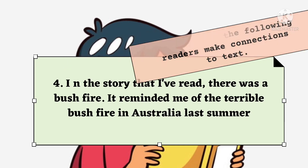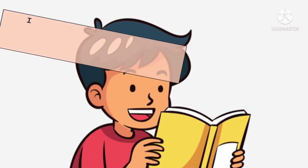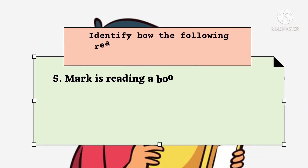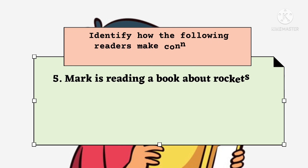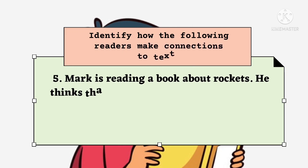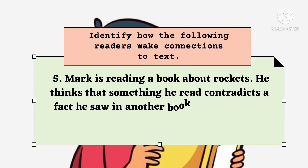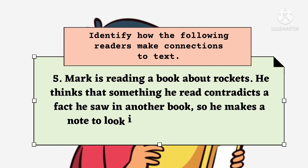We're down to the last number, number 5. Mark is reading a book about rockets. He thinks that something he read contradicts a fact he saw in another book. So, he makes a note to look it up when he gets home.